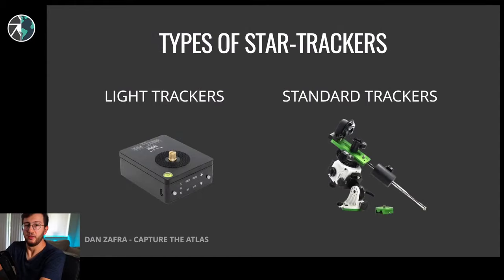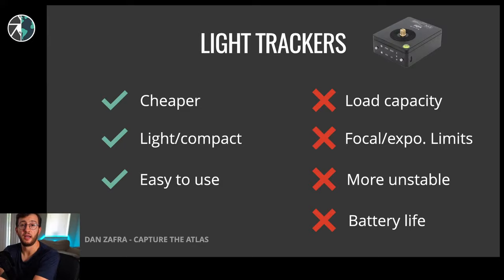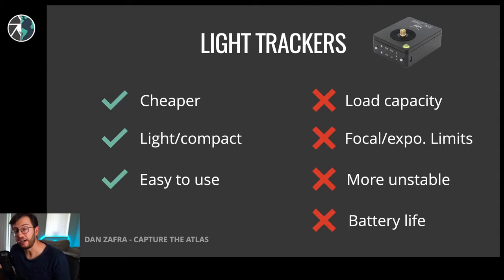Now we're looking at the types of trackers - light trackers and standard trackers. Getting into light trackers: the benefits are that they are cheaper, usually starting around $200 to $400. They are also lighter and more compact, perfect when traveling - like the Motion Move which fits in the palm of your hand. They are very easy to use, very simple and straightforward, making them very good to start out with.